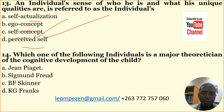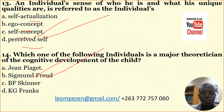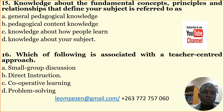Number fourteen: Which of the following individuals is a major theoretician of the cognitive development of the child? A: Jean Piaget, B: Sigmund Freud, C: BF Skinner, D: KG Franks. The correct answer is A: Jean Piaget. Piaget is the major theorist involved in the cognitive development of children.